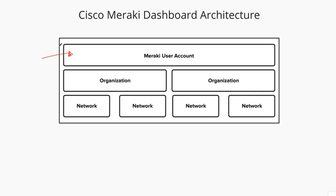So first, when you log in, if you have just one organization, you will not see an organization page to select which one. If you have just one, it's going to go right into your organization dashboard, and you will probably see different networks. But if you have more than one organization, you will see these two options — you can either select organization A or organization B. And inside of each organization, you have different networks.